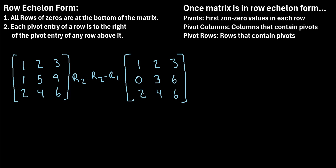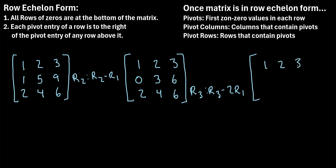We can make this a zero by doing row three minus two times row one, because that would be two minus two, which gives us the zero we need. So row three becomes row three minus two times row one. The first and second rows don't change. In the last row: two minus two times one is zero; four minus two times two is four minus four, which is zero; and six minus three times two is six minus six, which is also zero. This matrix is now in row echelon form.